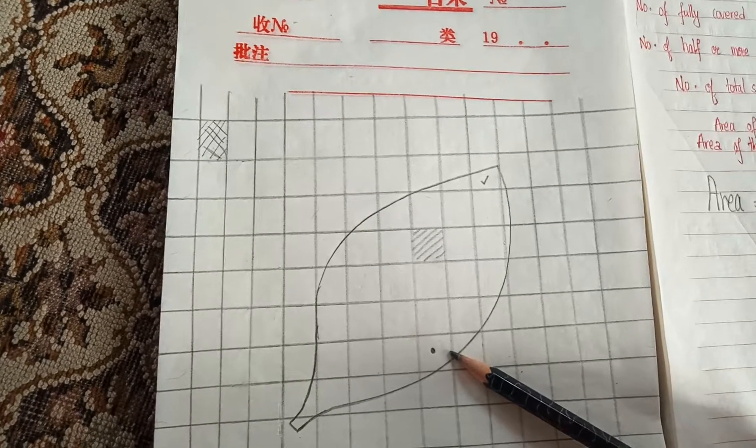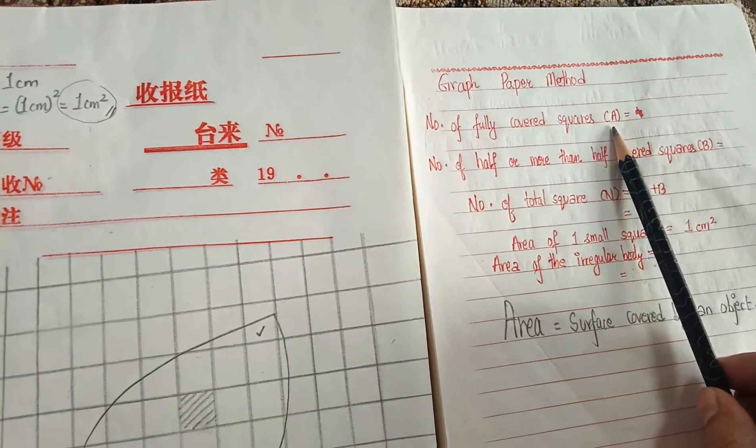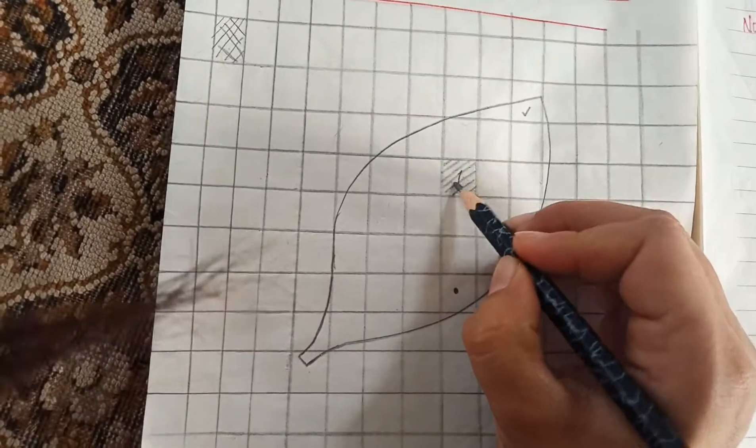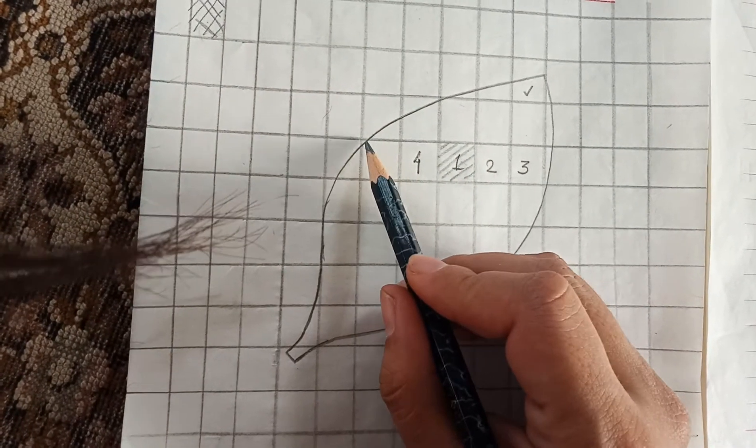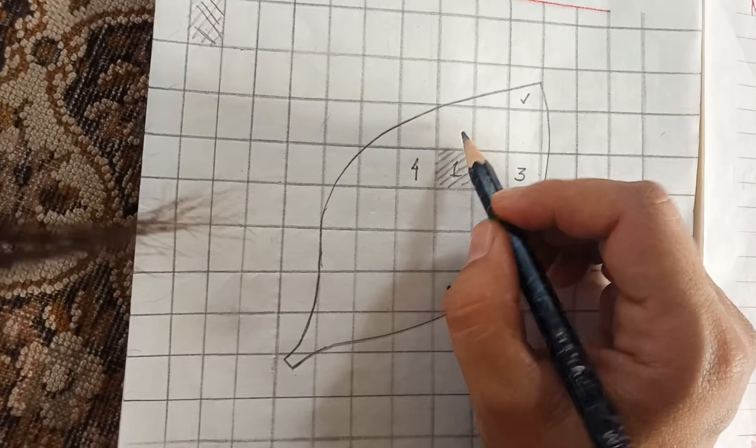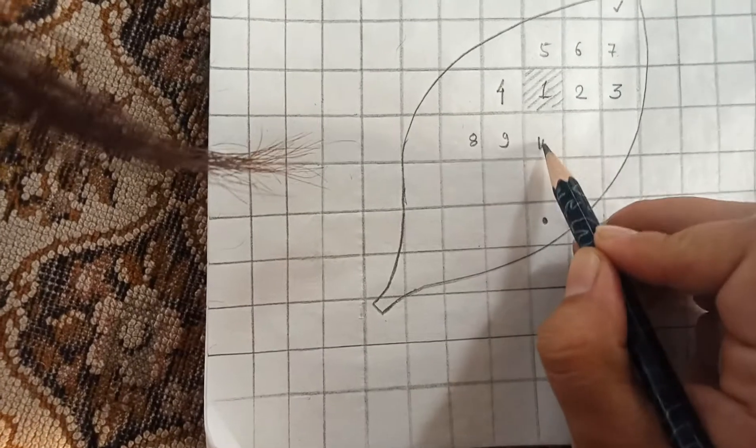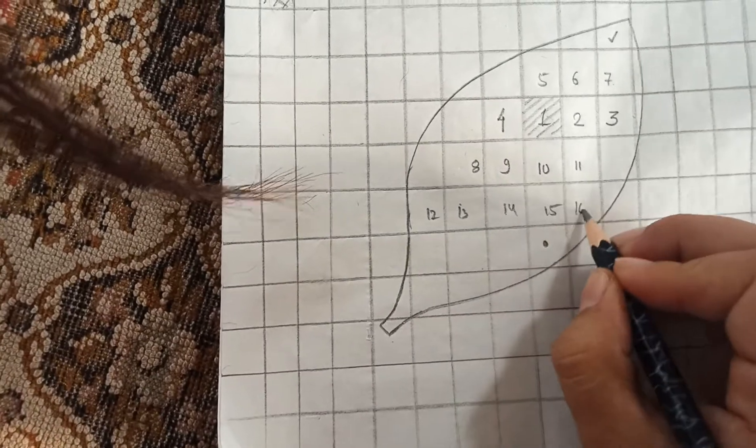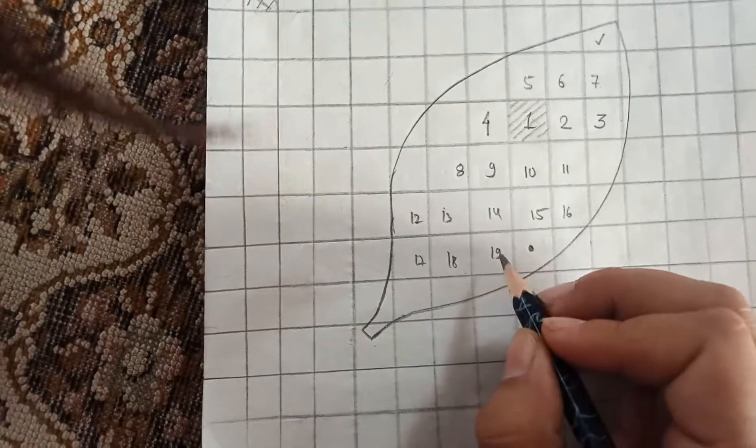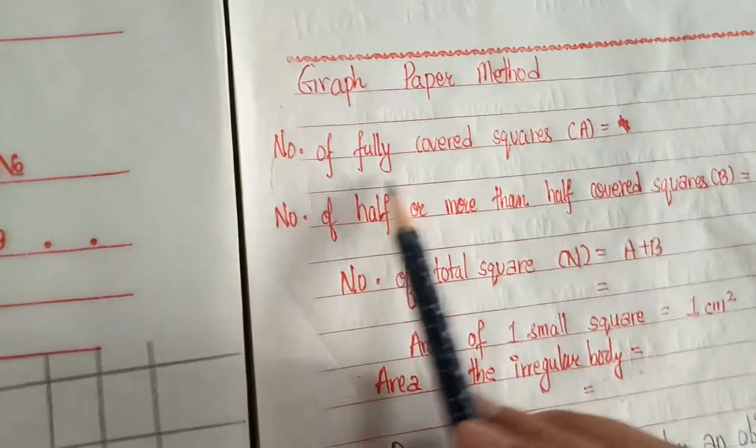Now we are going to count the number of fully covered squares and we suppose that as A. Let us count: 1, 2, 3, 4, 5, 6, 7, 8, 9, 10, 11, 12, 13, 14, 15, 16, 17, 18, 19. So total 19 squares are fully covered.